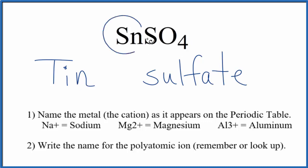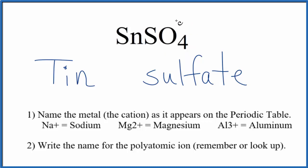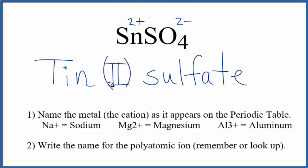But tin is a transition metal, and it can have a different charge depending on what it's bonded to. Here, the tin is bonded to the sulfate ion. The sulfate ion has a two minus ionic charge on the whole thing — this is a great one to remember. Since the sulfate has that two minus, the tin has to have a two plus ionic charge for these to balance out and give us a net charge of zero. So we need to show the two plus in the name for tin sulfate — we're going to put a Roman numeral two in parentheses. This is tin(II) sulfate.